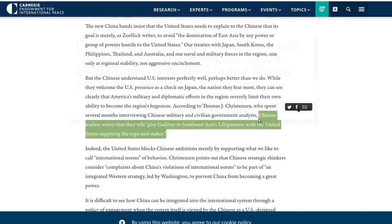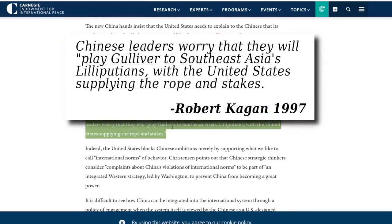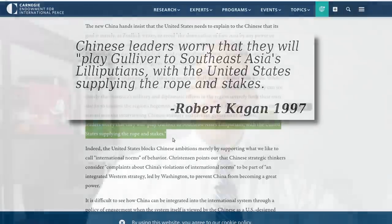And if we come down here, Chinese leaders worry that they will play Gulliver to Southeast Asia's Lilliputians with the United States supplying the rope and stakes. This was the U.S. strategy of encouraging nations in Southeast Asia to complicate relationships and ties with China or cut them off all together to encircle and contain China.